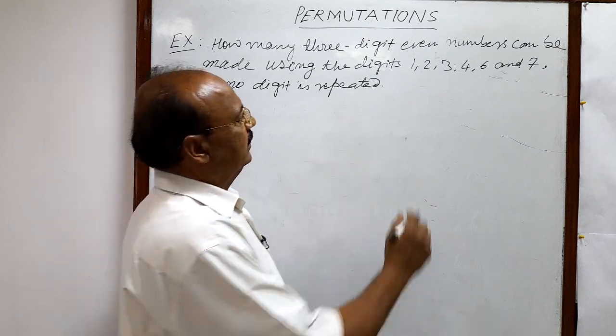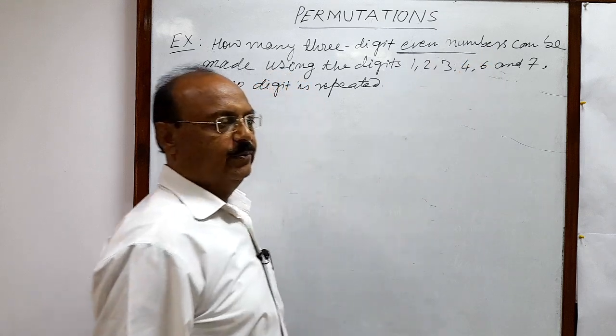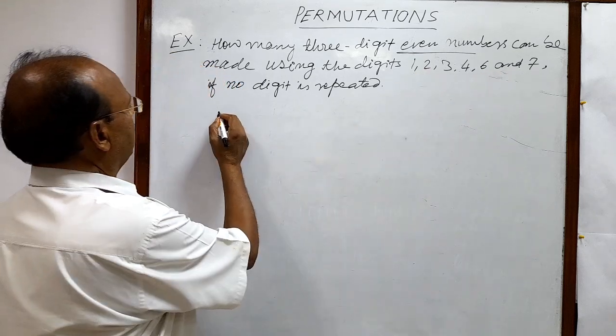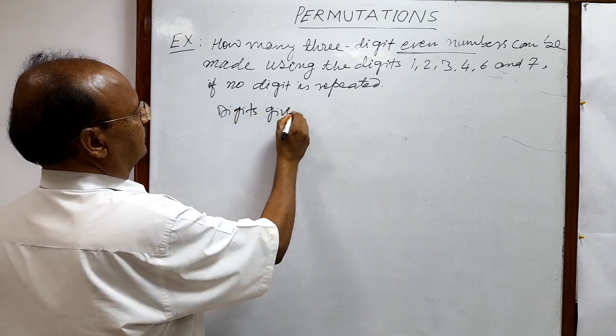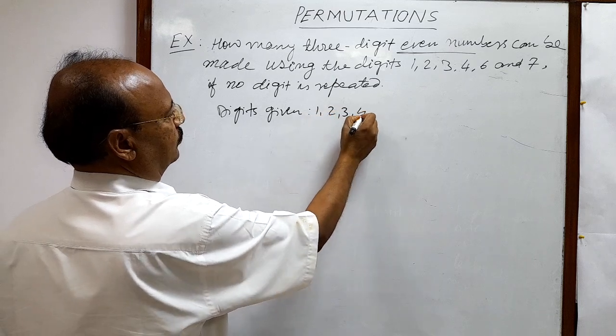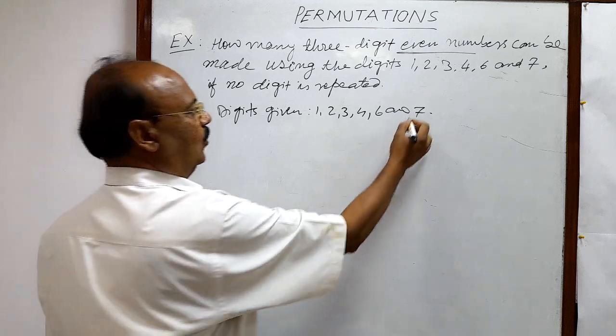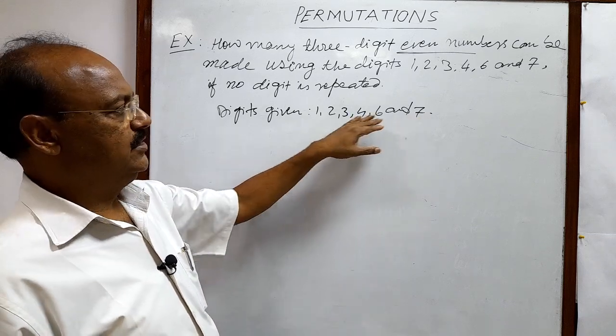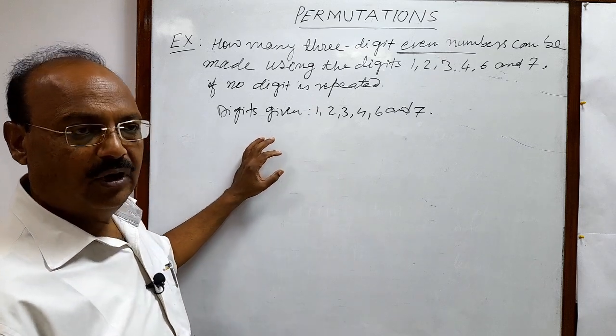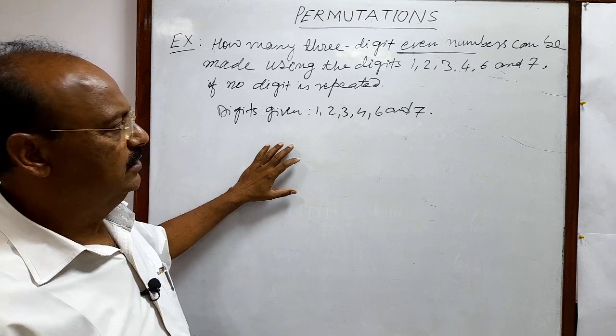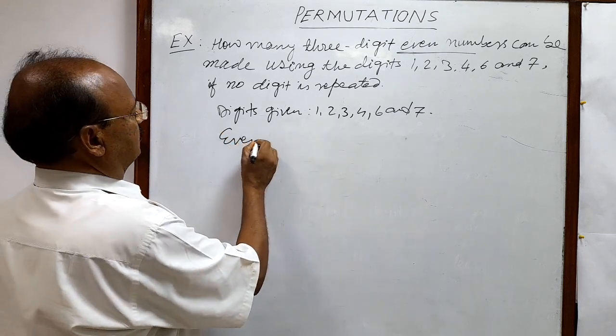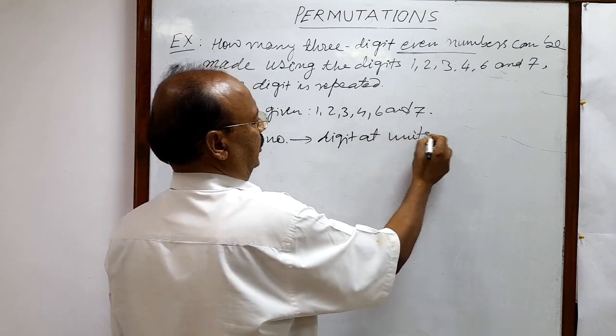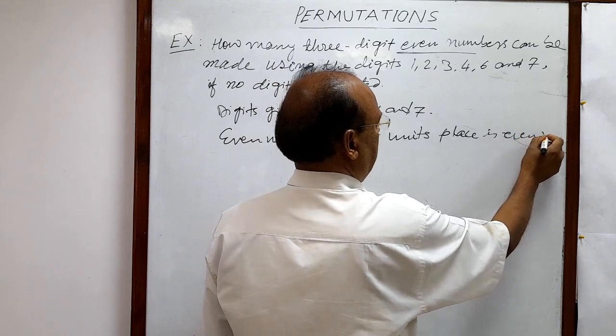So here we have to note that number should be even numbers. It means digit at units place should be even number. Total number of digits given: 1, 2, 3, 4, 6 and 7. So 6 digits are given and the number which you will form will be even number. Means digit at units place is even number.